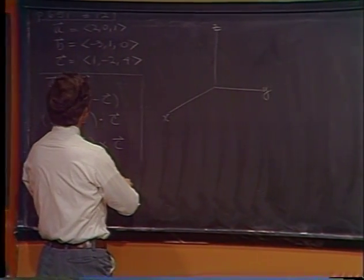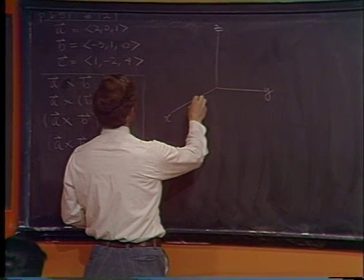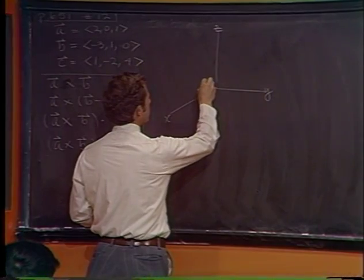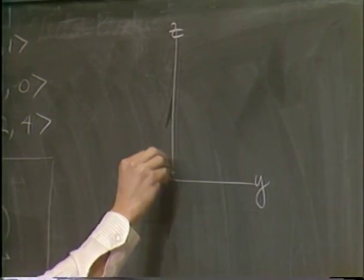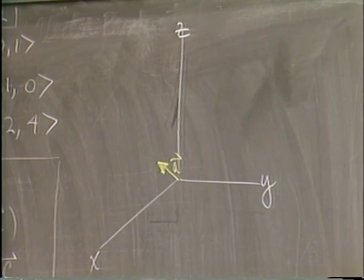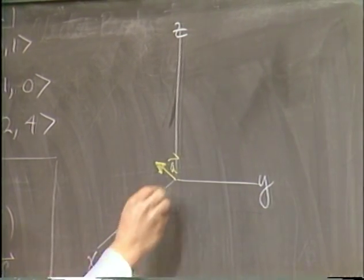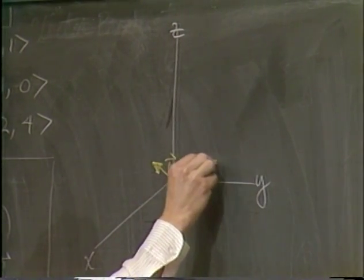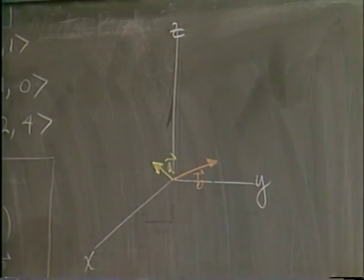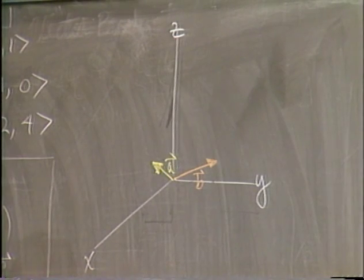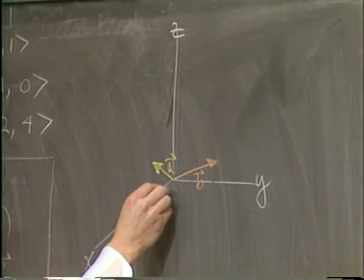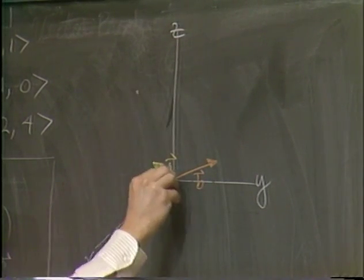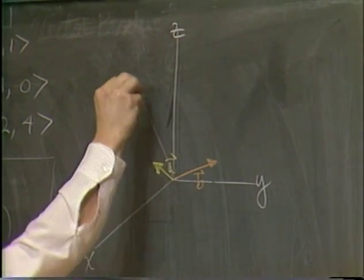The first vector a is 2i + 0j + 1k, pointing out toward us in this perspective. The b vector goes back minus 3 in the x-direction, 1 in the y-direction, staying within the xy-plane. The c vector comes out 1 unit forward, negative 2 units to the left, and plus 4 units up.